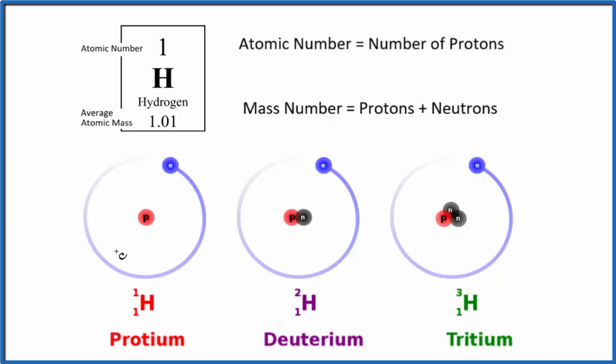If you look at each atomic model here for each isotope, you'll notice something that's similar. All of them have one proton. So the atomic number, that's the number of protons.